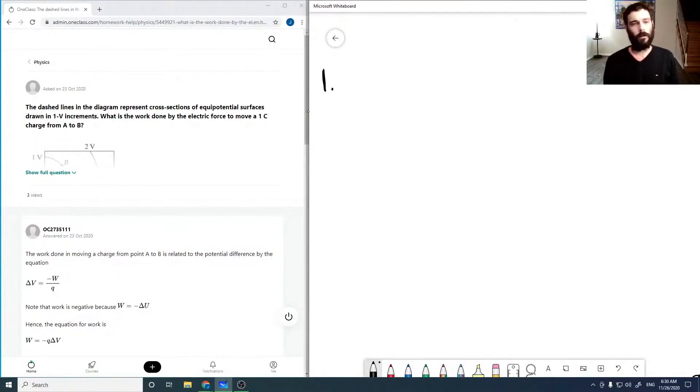So here's the first one. It just says dashed lines in the diagram. I'm just going to draw the diagram. So we've got a number of equipotential surfaces represented by these dashed lines and given their values. And that's one volt and that is zero volts.